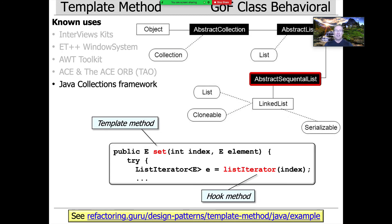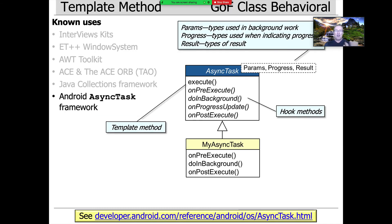Java has lots of examples of template method. The Java Collections Framework uses template method for many of the collection behaviors. You can see the set method defined on AbstractSequentialList has something called list iterator, which is a hook method that can be overridden by concrete subclasses like LinkedList to make different kinds of iterators.